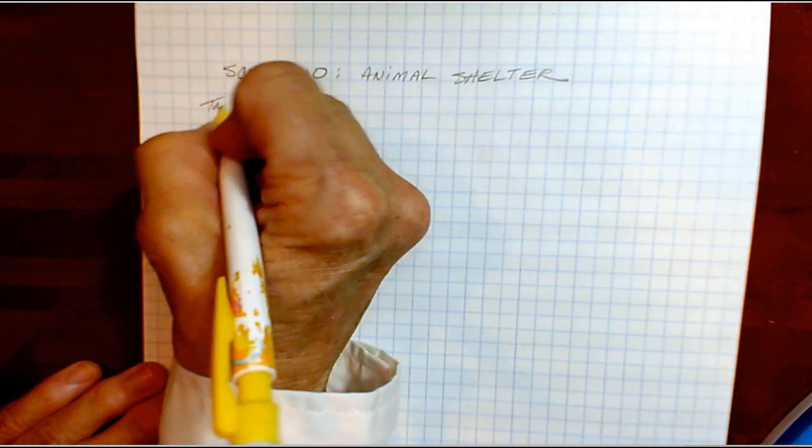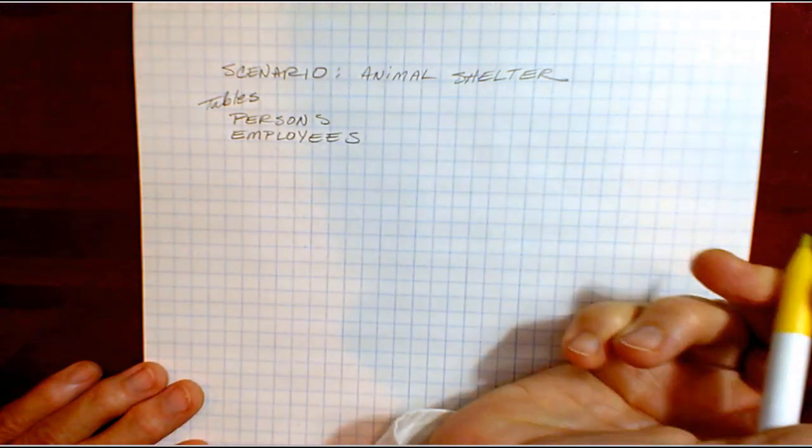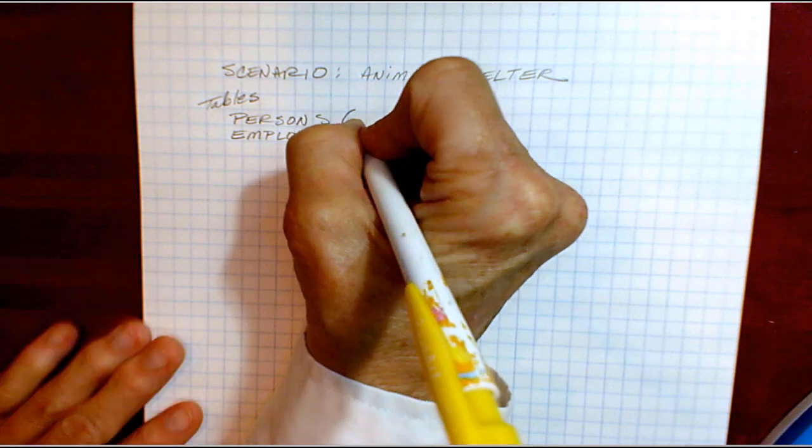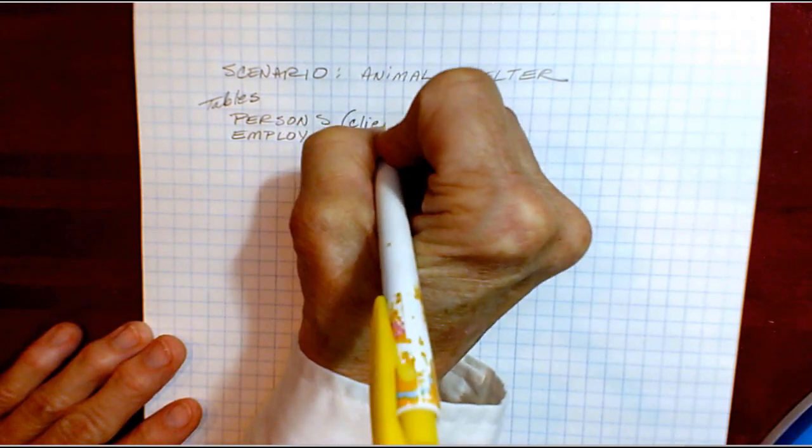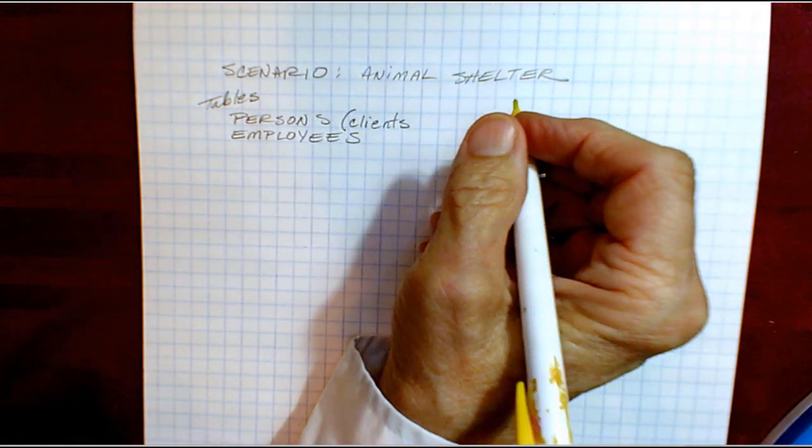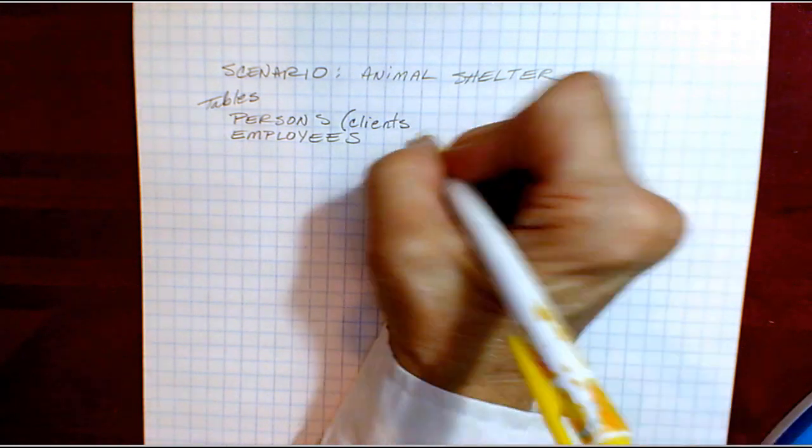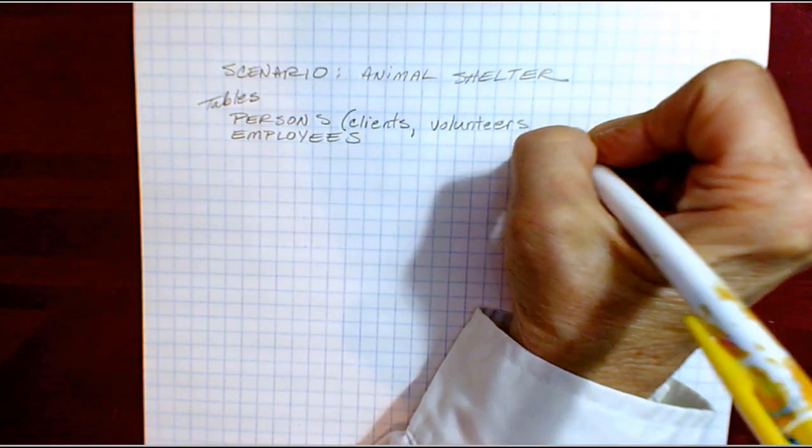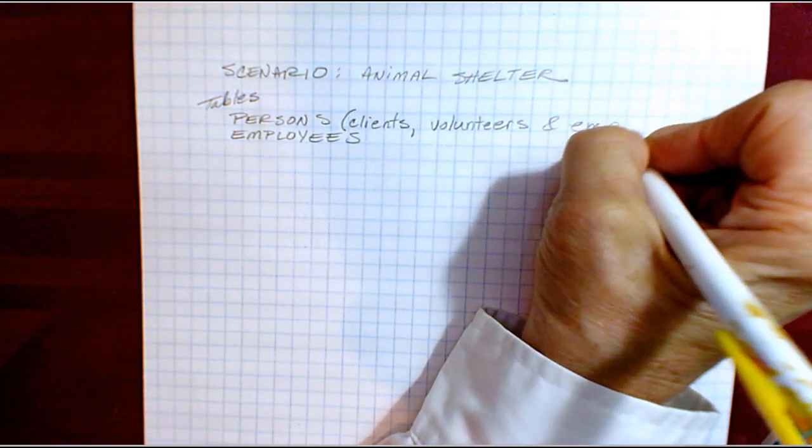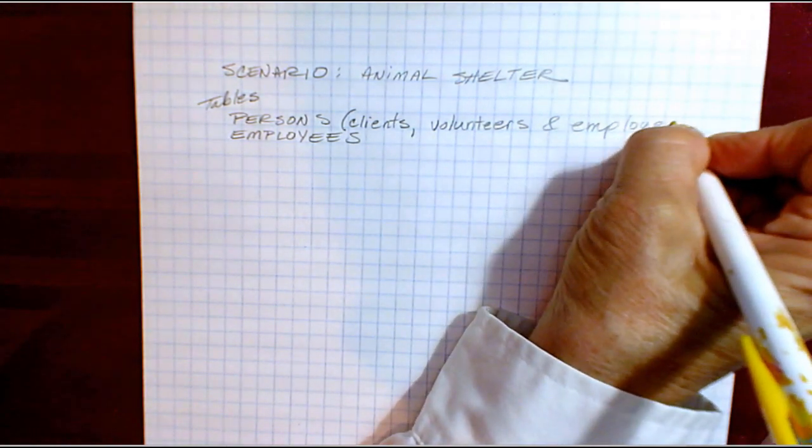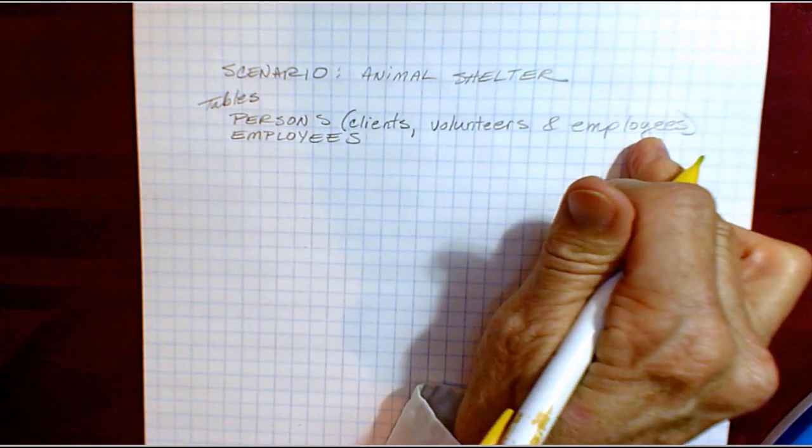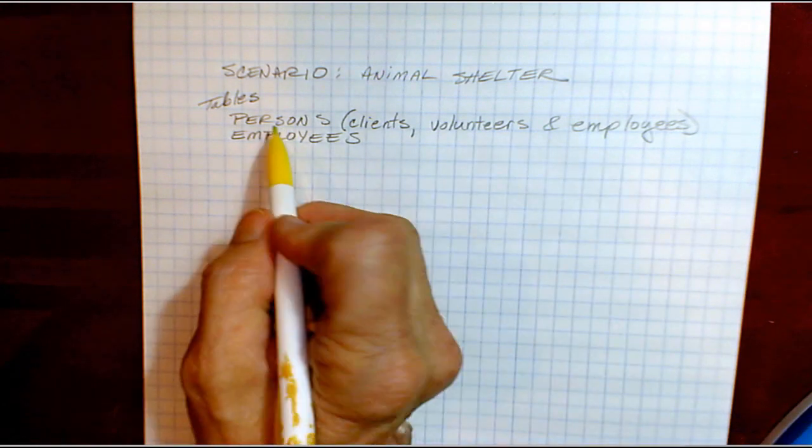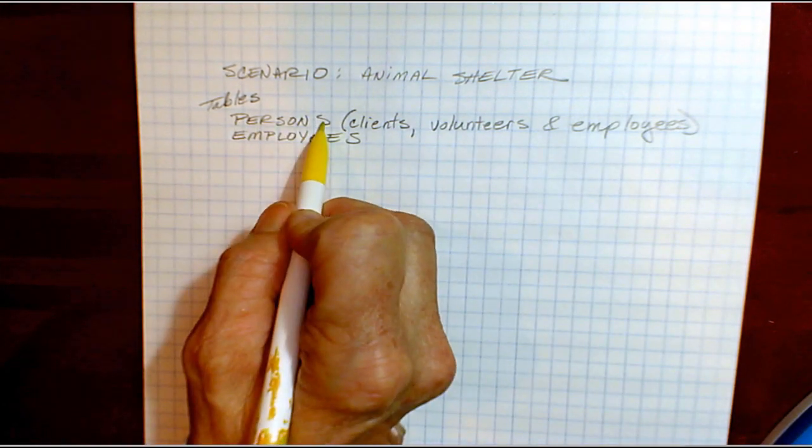Some of the tables, these would be the tables that we're going to get when we run the scripts. One is persons. Persons is a generic or abstract term for clients, people who come with animals or come and adopt animals. We have volunteers that work at the shelter and we have employees that work at the shelter. So things that are common to all of these, such as first name, last name, address, phone number, will be maintained in the persons table.